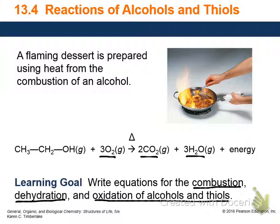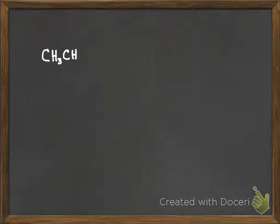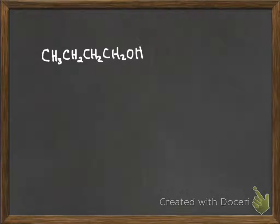I'll give you one example of a hydrocarbon or an alcohol combustion reaction. Let's do butanol. Butanol would be CH₃, CH₂, CH₂, CH₂OH. Now what I'm going to do is simplify my life and reduce that to a molecular formula, because the combustion reaction doesn't care whether it's a structural formula or a line drawing. When you do the balancing, just reduce it down to its molecular formula. So that's going to be C₄H₁₀O.